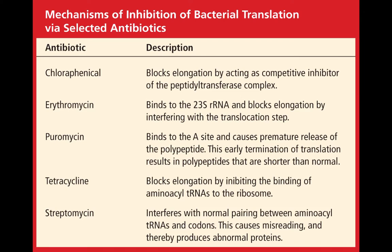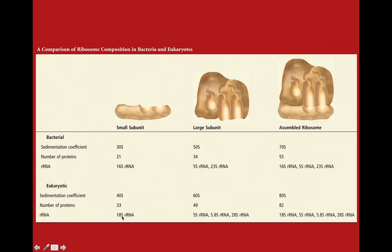There are many different antibiotics that exploit different stages of protein translation in bacteria. Some of them you are probably quite familiar with: erythromycin, tetracycline, streptomycin. For example, tetracycline blocks elongation by inhibiting the binding of aminoacyl tRNAs to the ribosome — that's one of the first steps in elongation. Erythromycin binds to the large ribosomal RNA and blocks elongation by interfering with the translocation step, so you add an amino acid but then you can't add any more. Streptomycin is a little insidious — it interferes with normal pairing between aminoacyl tRNA and codons, causing misreading and a lot of abnormal proteins.